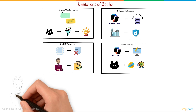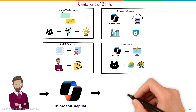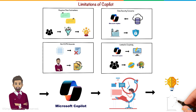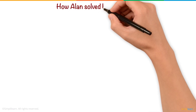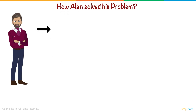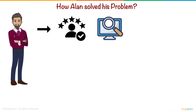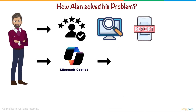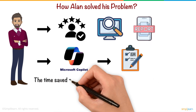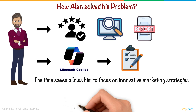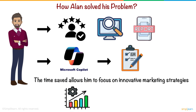Despite these limitations, Alan finds that Copilot significantly reduces his workload, allowing him to focus on creative and strategic tasks. Previously, he spent hours compiling customer feedback, analyzing data, and creating reports. Now, he uses Copilot to automate these tasks. The time saved allows him to focus on innovative marketing strategies. Within a month, his productivity soars and he finally achieves work-life balance.